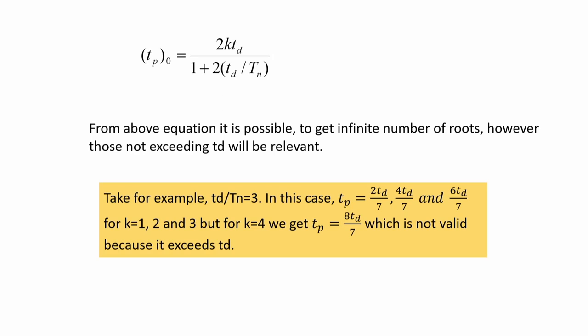The non-dimensional maximum displacement R_d is plotted against t_d/T_n, giving the forced vibration response spectrum curve. Similarly, the free vibration phase gives another R_d versus t_d/T_n curve. For design purposes, we take the overall maximum response from both phases. The overall maximum response spectrum curve gives the non-dimensional peak response; to get the actual response, multiply by the static displacement p₀/k.